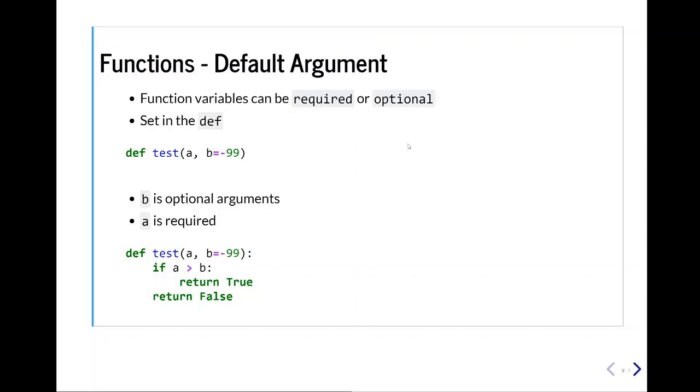Additional thing about functions, and one of the advantages, is that functions have variables, and the variables can be either required or optional. Inside our definition, we do def, the function name, and then we declare variables. Well, a variable without an equals and a value is a required parameter. An optional parameter is one defined like variable b. So b equals negative 99. If we do not provide anything for b when we call our function test, the program will assume that b, it should be negative 99.